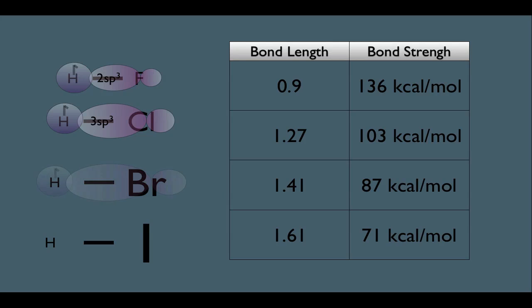To make sense of the HBr bond, you would have a head-on overlap this time of a 4SP3 hybridized orbital and the 1S orbital of the hydrogen. Again, this is because we're hybridizing the fourth shell of Br. And lastly, the HI bond would be a head-on overlap of a 5SP3 hybridized orbital and the 1S orbital of the hydrogen.